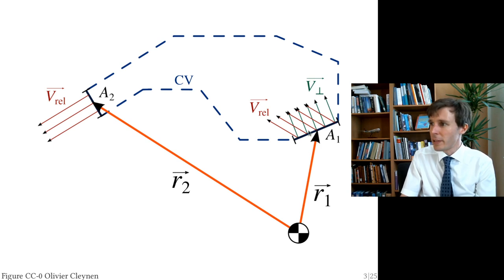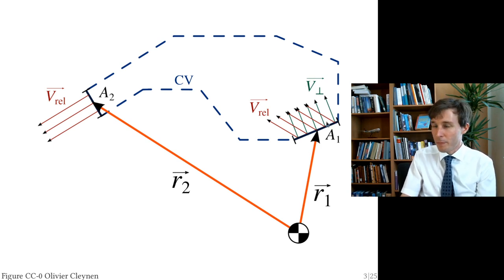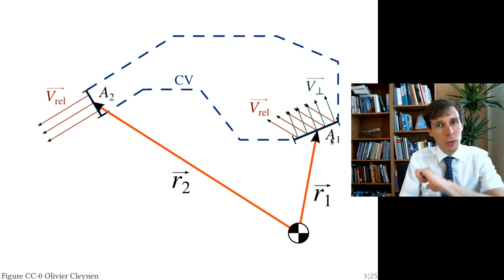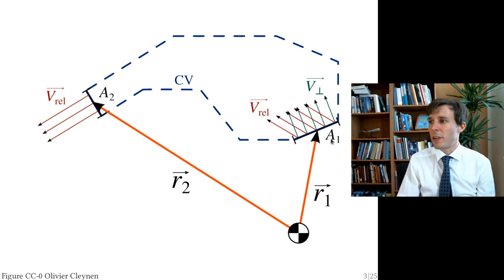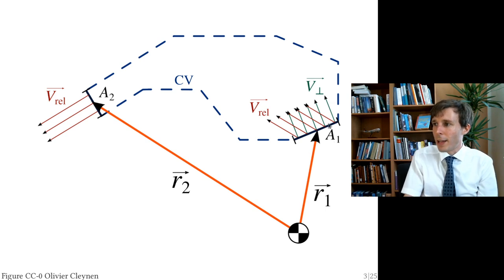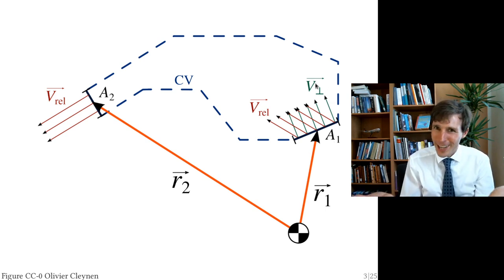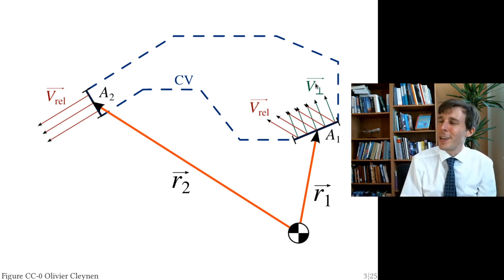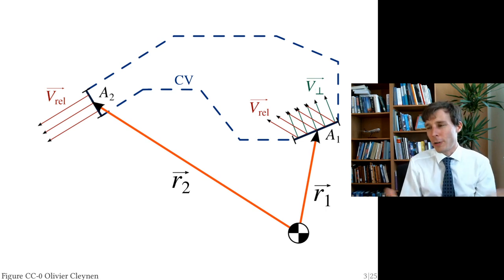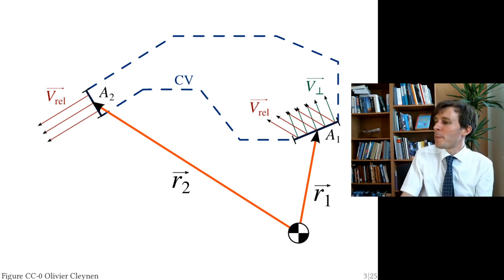You take the component of velocity perpendicular to the inlet and form a dot product with the outward-pointing normal n. This gives a signed scalar — which is annoyingly positive for outgoing flow and negative for incoming flow in fluid mechanics convention.